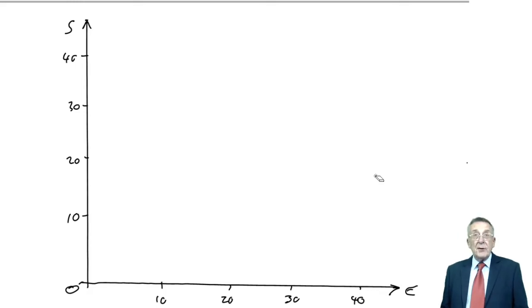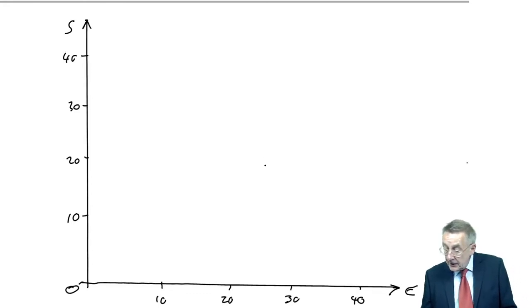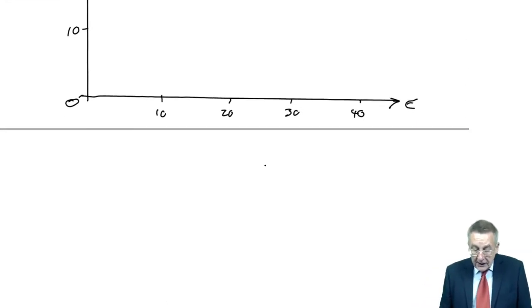some combinations of S's and E aren't possible. You know, we can't possibly make 40 E's, for example, because we're limited to 10. So the first thing we do is to actually draw the constraints on the graph. Now, let me show you how we do it.